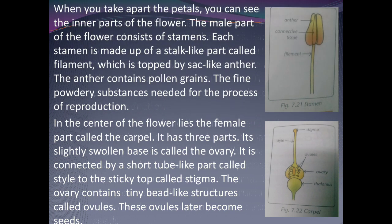The stamen is the male part of the flower. Each stamen has three components: the anther, connective tissue, and the filament. The filament is topped by the sac-like anther. Inside the anther there are pollen grains — the powdery substance needed for the process of reproduction.